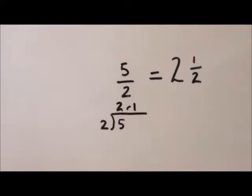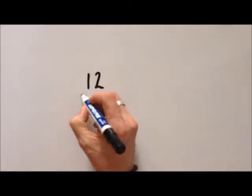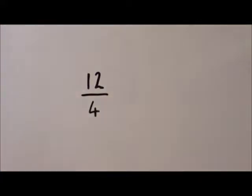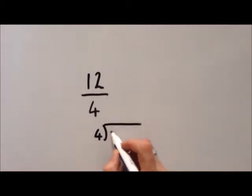Ok let's do another one. 12 over 4. Or a quarter, so that's 12 quarters. Once again we'll put it in a bus stop division. And we put our 12 on the inside.